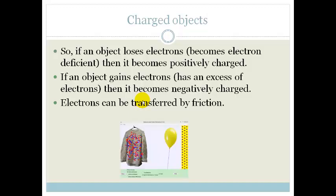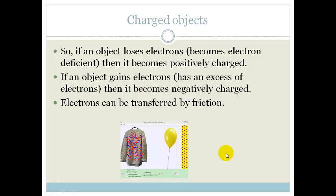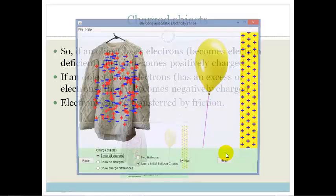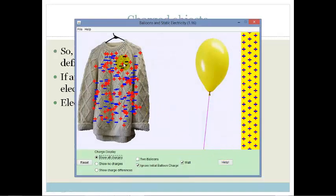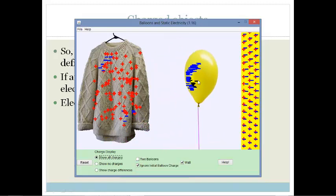Electrons can be transferred by friction. Let's look at this little Java applet and I'll show you what I'm talking about. Here we've got a jersey which is totally neutral and we have a wall which is neutral. Now we're going to take our little balloon and we're going to rub it. And as we rub it, we will see that the negative electrons are being attracted to and they get transferred to the balloon.